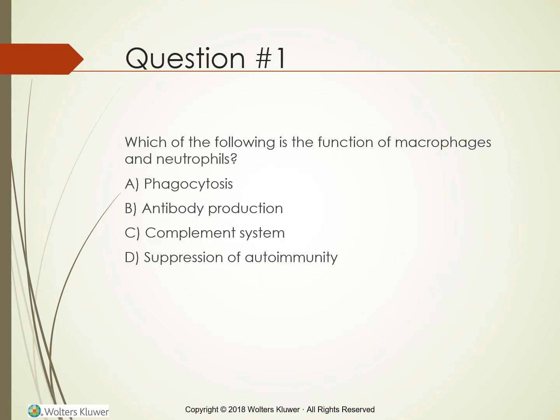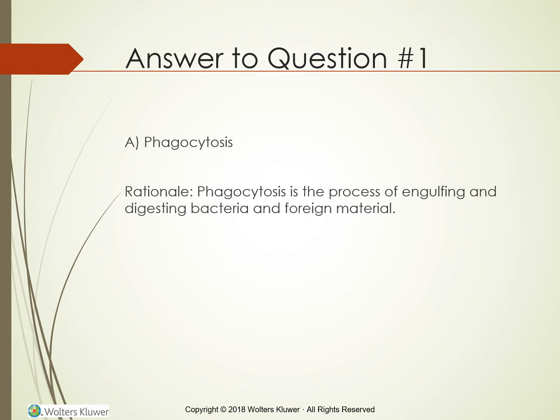Question: Which of the following is the function of macrophages and neutrophils? A. Phagocytosis. B. Antibody production. C. Complement system. D. Suppression of autoimmunity. The answer is A, phagocytosis — the process of engulfing and digesting bacteria and foreign material.